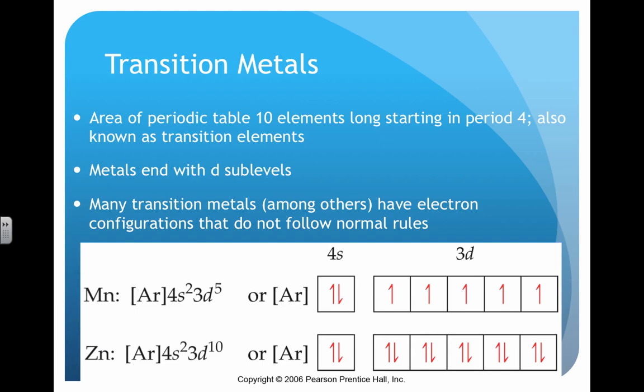The reason is they can rearrange themselves in different ways, giving them different forms of stability. As a result of electron loss, gain, and redistribution, they might end up with different charges.